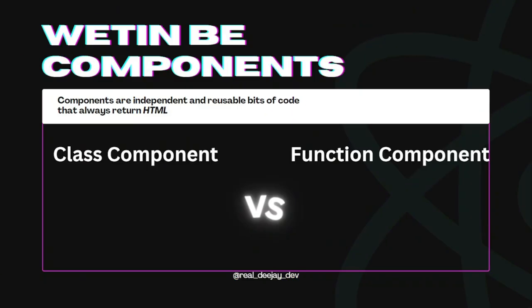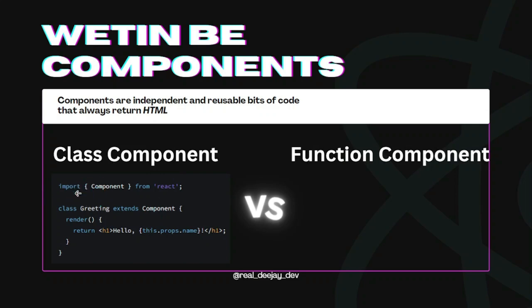Now, we get two types of components. A component is not just an HTML element — it renders something and shows something on screen, and you can reuse it over and over. The first type is class components. Most people these days use functional components, but you might still see class components in some codebases. Class components are a bit more complex to work with, which is why many people prefer not to use them.